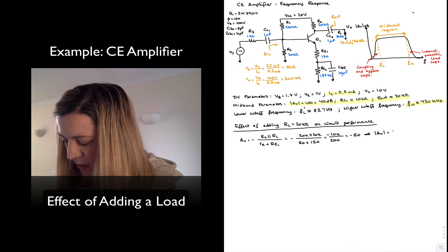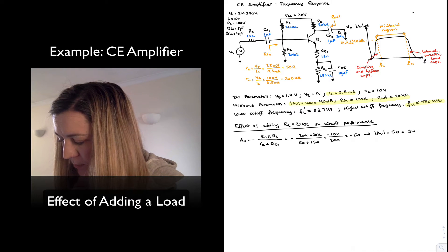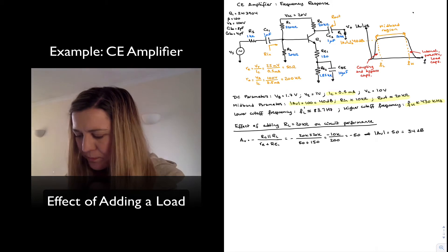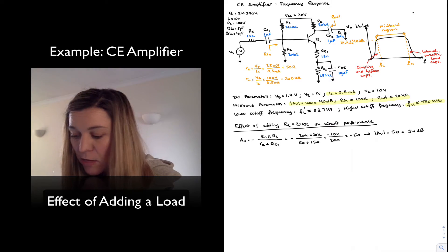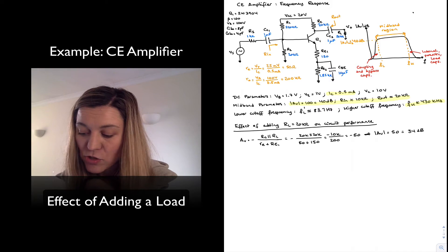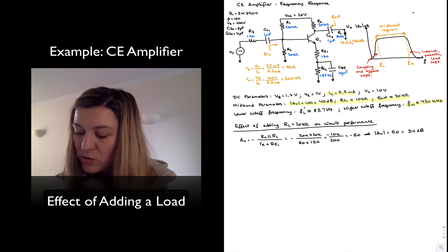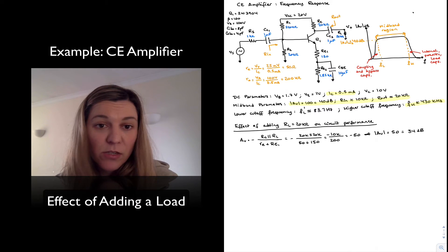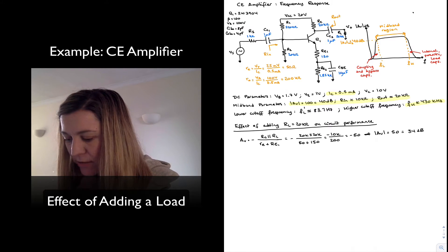The magnitude of the gain is 50, or 34 dB — basically half of what it was before. My input resistance is unaffected by the change. My output resistance, considering it to be what's on the left-hand side of the load, I will still treat RL as separate from the amplifier's output resistance, so I'm not going to recalculate that.